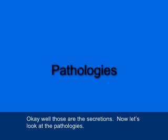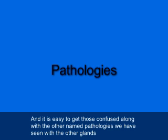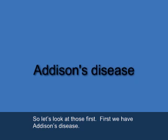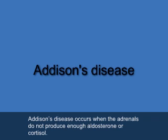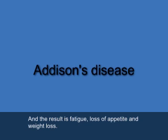Now let's look at the pathologies. We have two pathologies that are name pathologies — they have someone's name attached to them, and it's easy to get those confused. First, we have Addison's disease. It occurs when the adrenals do not produce enough aldosterone or cortisol — a form of decreased secretion. The result is fatigue, loss of appetite, and weight loss.